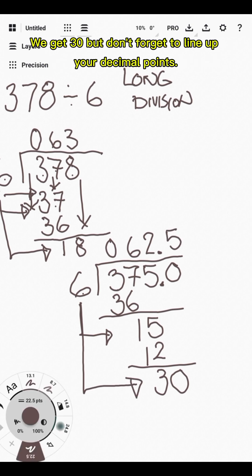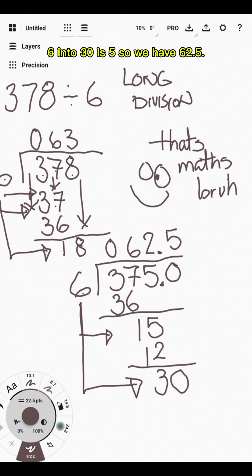We get 30, but don't forget to line up your decimal points. 6 into 30 is 5, so we have 62.5.